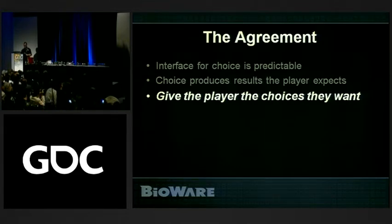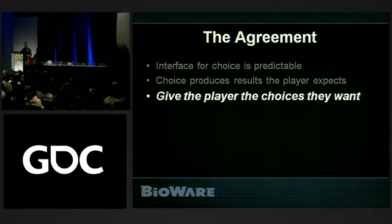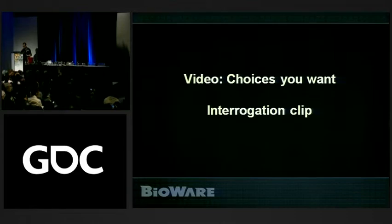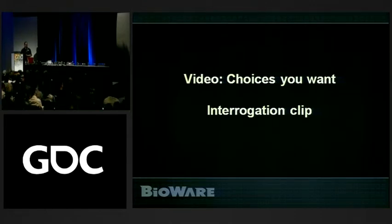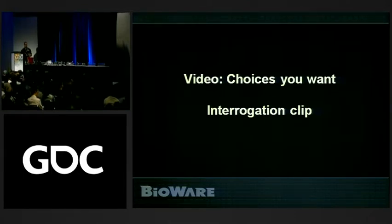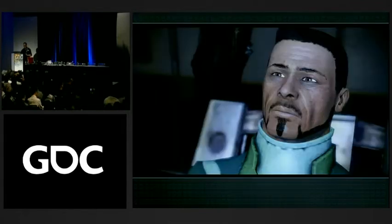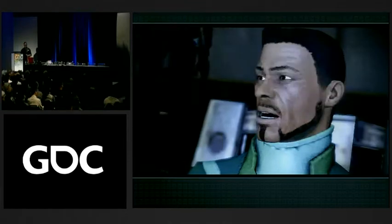The third principle is to give the player choices they want — and I often preface this with 'when they want to make them,' which is also very important. We're going to look at an interrogation sequence. Shepard's interrogating somebody, so if I'm a player, I expect Shepard might get rough with them. As a designer, if I don't put that interaction in, I'm not meeting someone's expectations of what an interrogation should be. That's exactly what we did with some interrupts in this interaction.